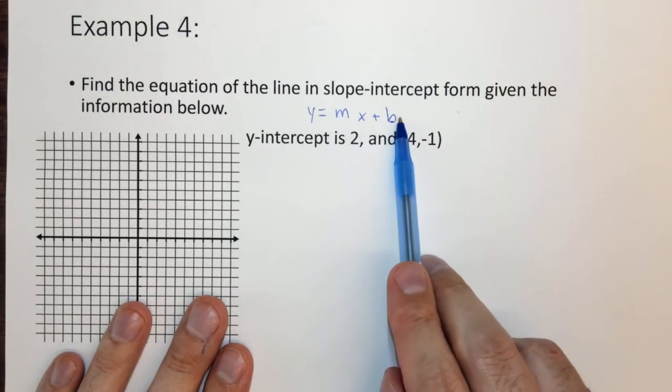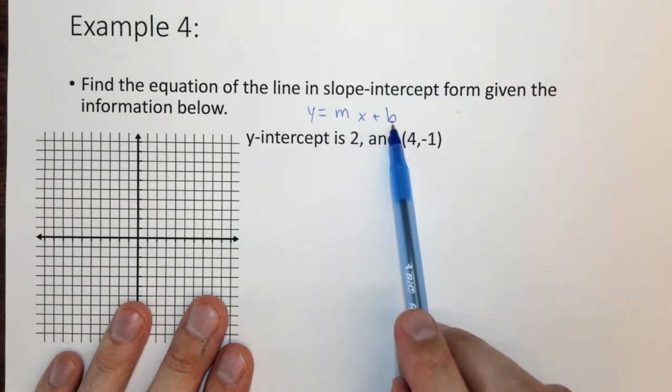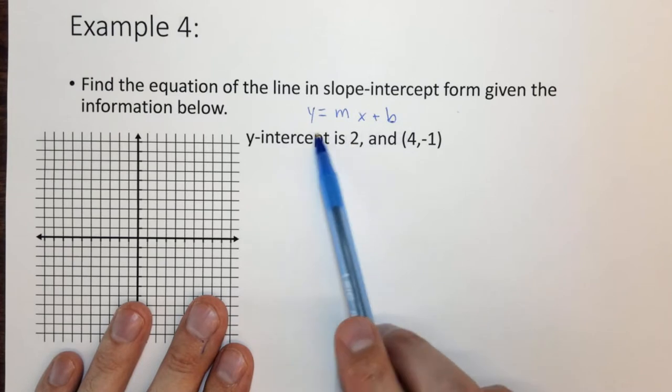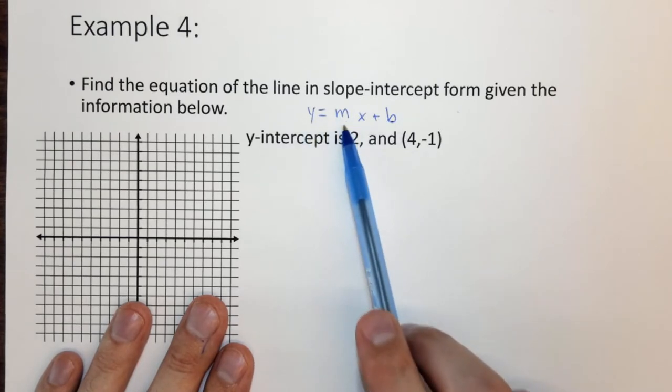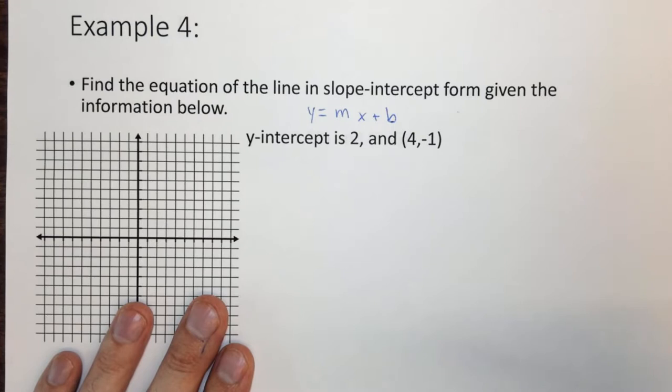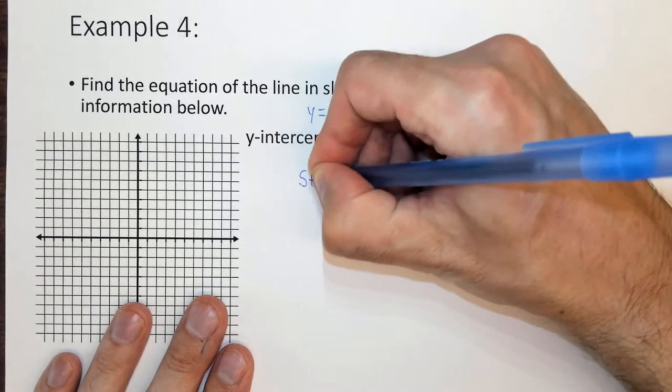So first of all, we need to find y equals mx plus b. We are given b here because we have the y-intercept. We also have given a y and an x value, so we could find m that way. Or we can remember that the slope